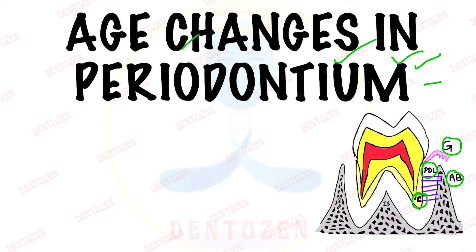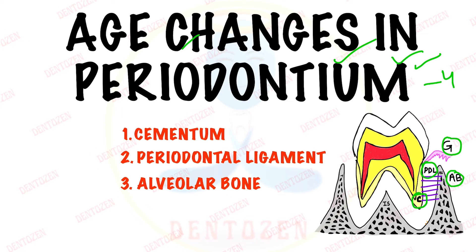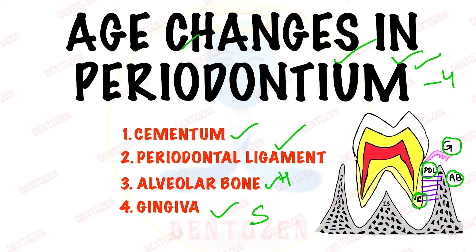So there are four tissues. Out of these four tissues, cementum and alveolar bone are hard tissues, whereas periodontal ligament and gingiva are soft tissues.